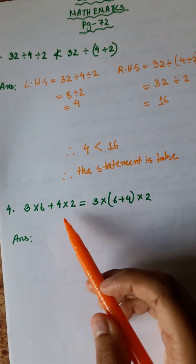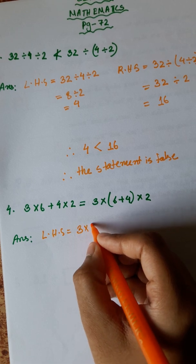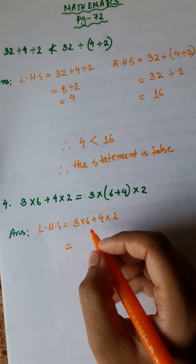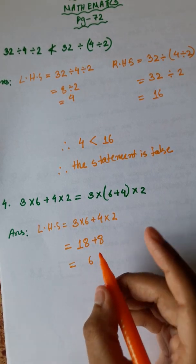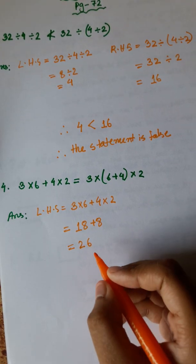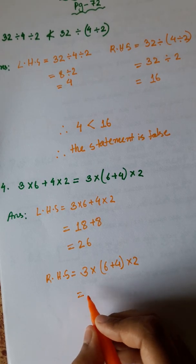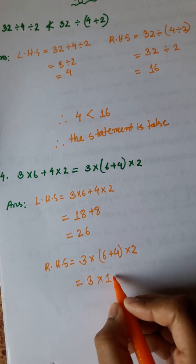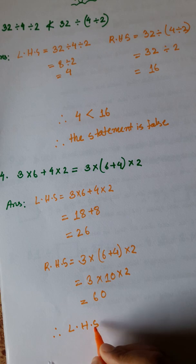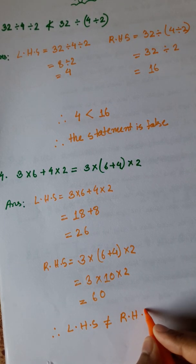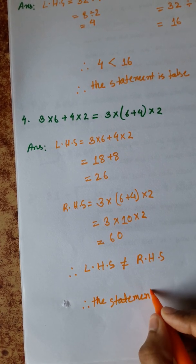Number 4: 3 multiplied by 6 plus 4 multiplied by 2 equals 3 multiplied by 6 plus 4 multiplied by 2. Left hand side: 3 into 6 is 18, plus 4 into 2 is 8, total 26. Right hand side evaluates differently, giving 60. Left hand side is not equal to right hand side, so the statement is false.